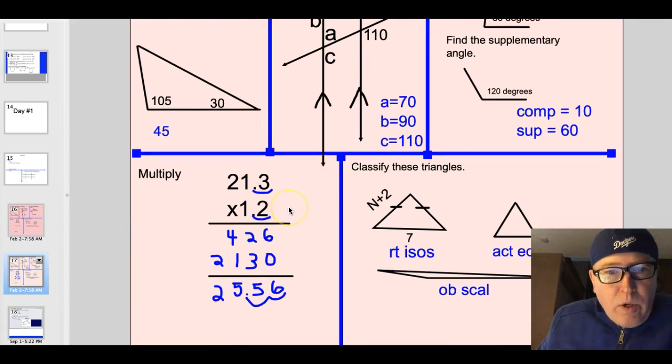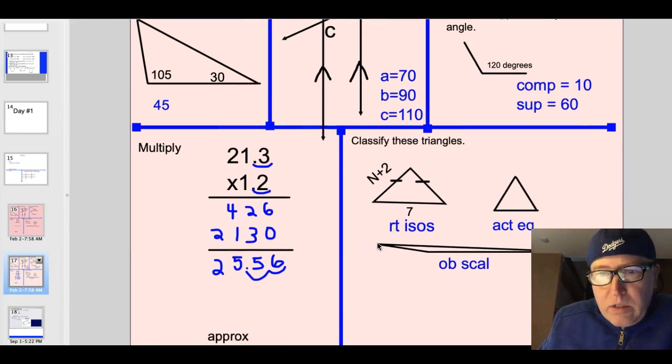You can check this out. 21.3 times 1.2. You should come up with 25.56. This is a tough target here. We'll spend a lot of time in May working on this so we may as well get working on it now.